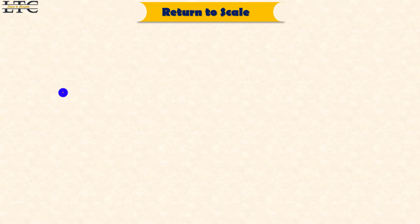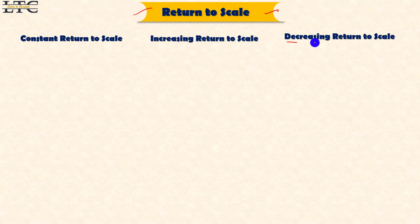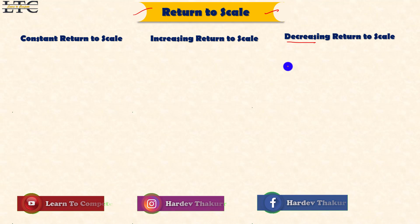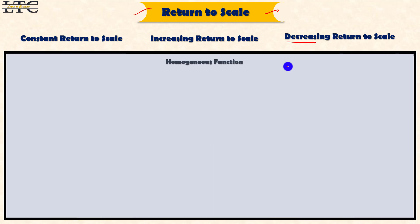Let's talk about return to scale — this is a very important point in Cobb-Douglas production function. We have studied three types of return to scale: constant return to scale, increasing return to scale, and decreasing return to scale. In the Cobb-Douglas case, we need to understand when each of these applies. But first, we have to understand one thing: what is a homogeneous function?